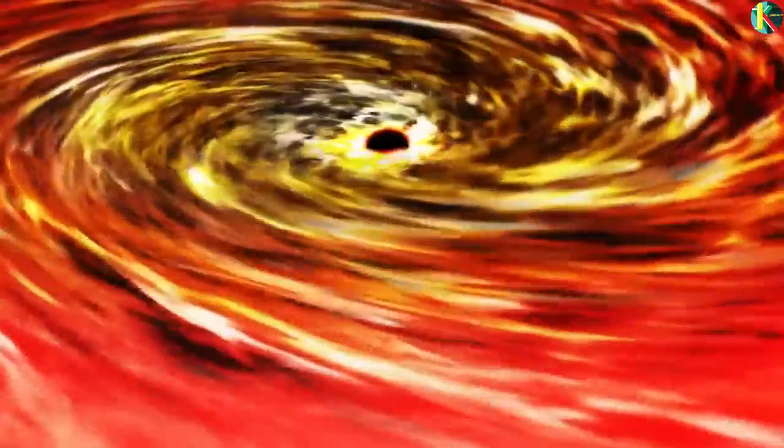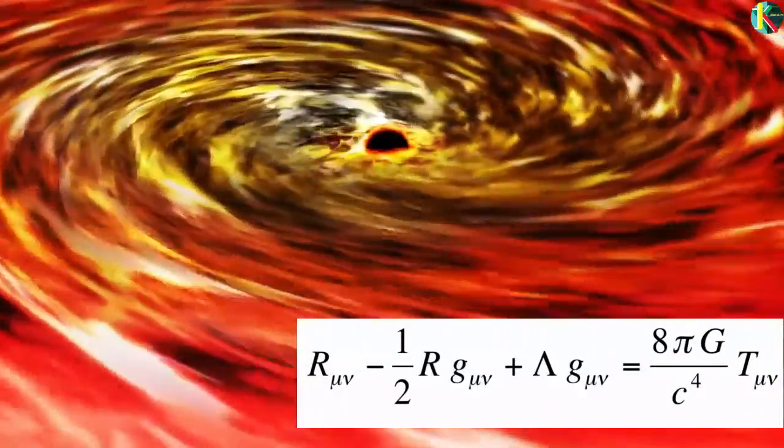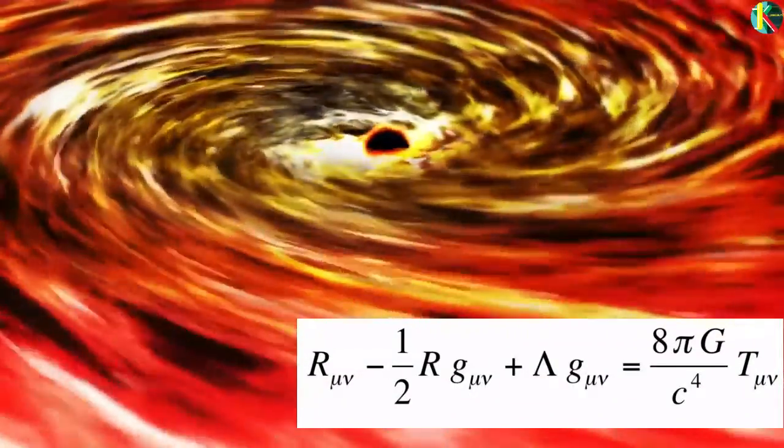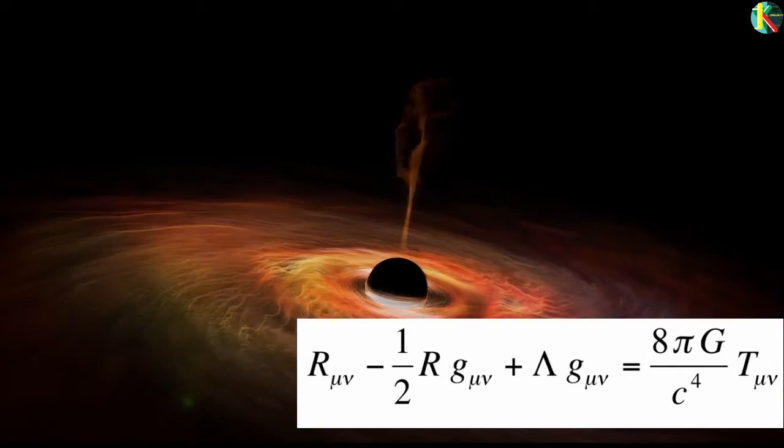Black holes are the inevitable result of extreme gravitational collapse. At least they are inevitable according to the equations of Einstein's general theory of relativity, which is one of the most thoroughly tested in all of physics.